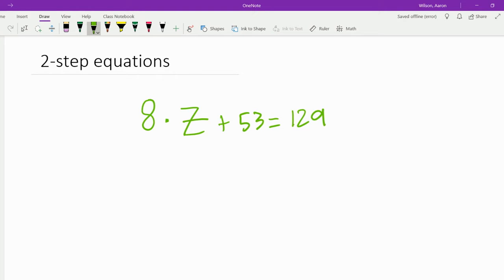So your first step is to take this 53 right here, and since we're adding, we need to do the inverse operation to adding, which is subtraction. So we're going to subtract 53 from 129, which is 76.